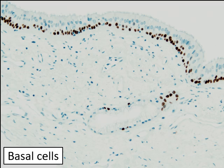Basal cells are located at the base of the epithelium, just above the basement membrane. They are difficult to see on H&E sections because their nuclei are indistinguishable from those of ciliated columnar cells due to crowding. A p40 or p63 immunohistochemical stain colors the nuclei of basal cells brown, revealing how many there are. These cells are thought to be progenitor cells and are associated with squamous cell carcinoma of the lung.